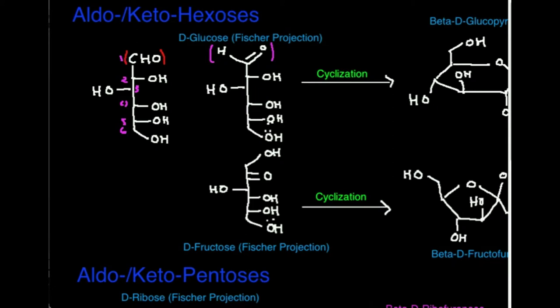Aldoses or aldohexoses stem from the fact that there's an aldehyde at this position. Ketoses or ketohexoses stem from the fact that position two is a ketone — two different functional groups. Glucose has the aldehyde at position one; fructose has the ketone at position two. Either way, they can cyclize because the ketone and aldehyde are fairly reactive.